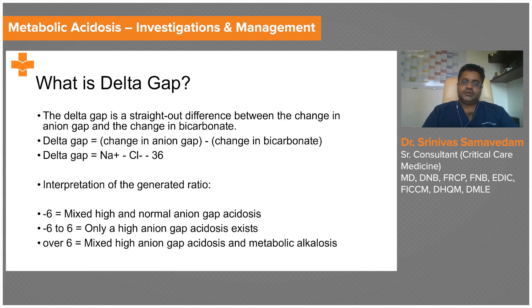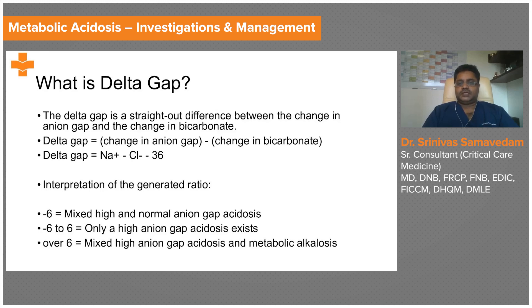This ratio is interpreted as follows: if the delta gap is less than −6, there is a mixed high and normal anion gap metabolic acidosis. If the delta gap is between −6 and +6, there is only a high anion gap metabolic acidosis. If the delta gap is more than +6, there is a mixed high anion gap metabolic acidosis plus a metabolic alkalosis, which can coexist.